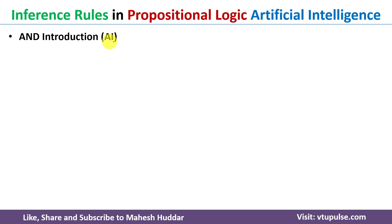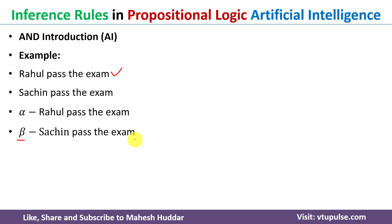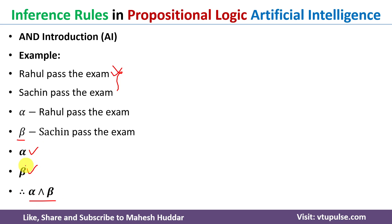The next rule is And Introduction. Given two statements — 'Rahul passed the exam' (alpha) and 'Sachin passed the exam' (beta) — since both alpha and beta are true, we can introduce 'and' and write the conclusion as alpha and beta, which is also true.